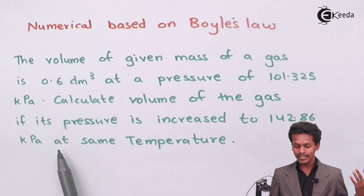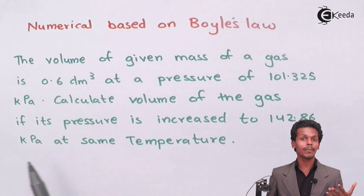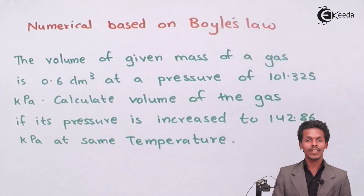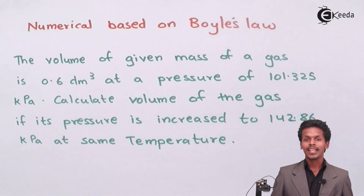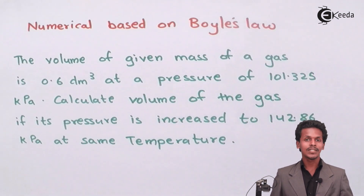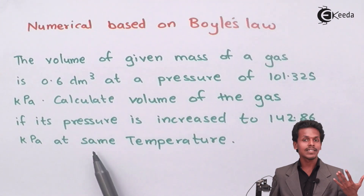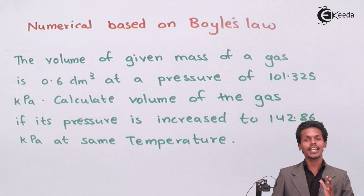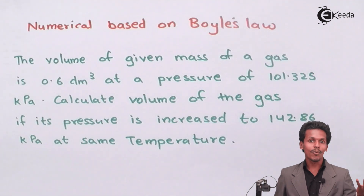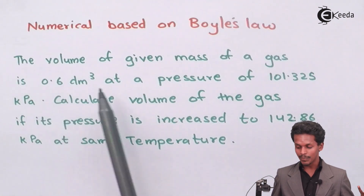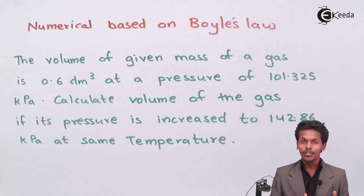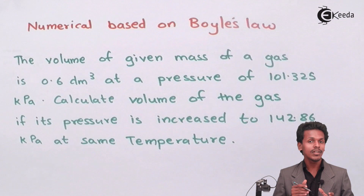In this case, as you can see, the temperature is being kept constant. This indicates that among the laws we have studied — Boyle's Law, Charles' Law, and Gay-Lussac's Law — the constant temperature condition points specifically to Boyle's Law. Also, the pressure value and the volume are both given in this numerical, so therefore we are basically talking about Boyle's Law.